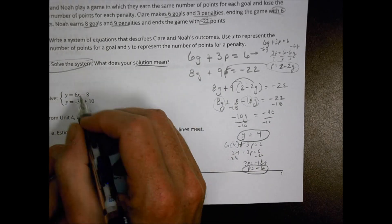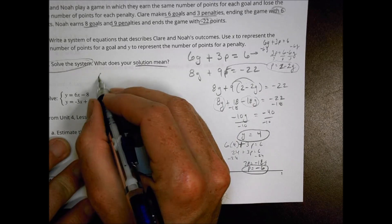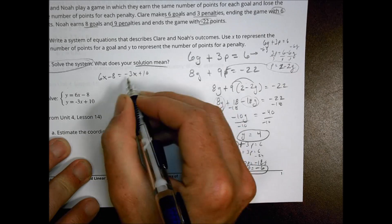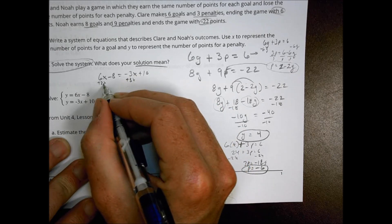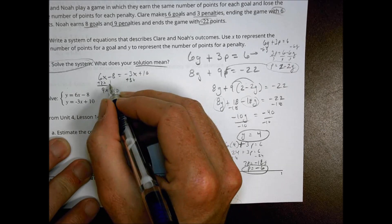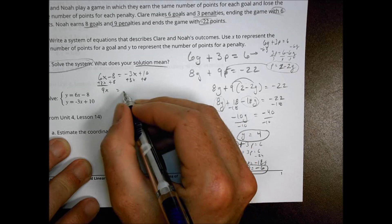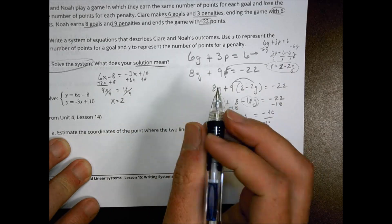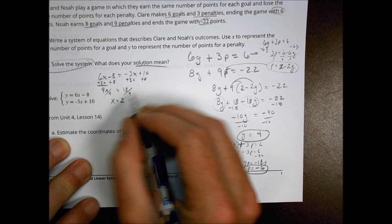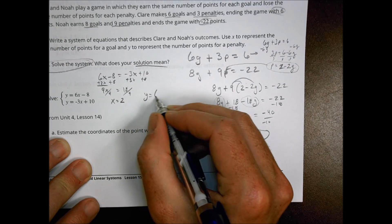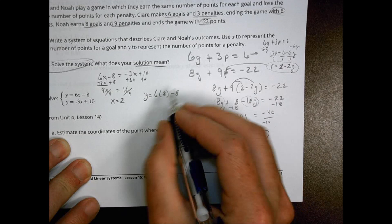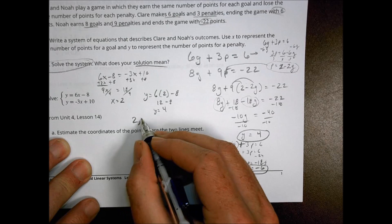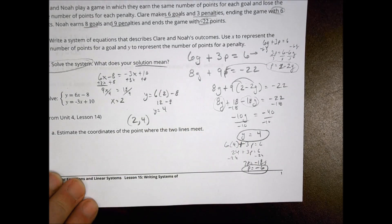Number four, solve this one out, set it equal to each other. Let's do 6X minus 8 equals negative 3X plus 10. I'm going to add 3X to both sides. So 9X is going to be equal to, add 8 here, 10 plus 8 is 18. Divide by 9, X is going to be equal to 2. Now are we done there? Nope. We got to plug that back into our system of equations. So let's do Y equals 6 times 2 minus 8. 6 times 2 is 12 minus 8 is 4. Y equals 4. So our solution is 2 comma 4 for that one right there.